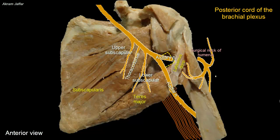Sometimes the axillary nerve is called the circumflex nerve. As it winds around the surgical neck of the humerus, it lies deep to deltoid muscle, which it supplies. It also sends a branch to teres minor muscle. Finally, it sends a cutaneous branch — the upper lateral cutaneous nerve of the arm — which supplies the skin over the inferior part of deltoid muscle. Remember that the skin over the upper part of deltoid is supplied by the supraclavicular nerves, branches of the cervical plexus, and not the brachial plexus.